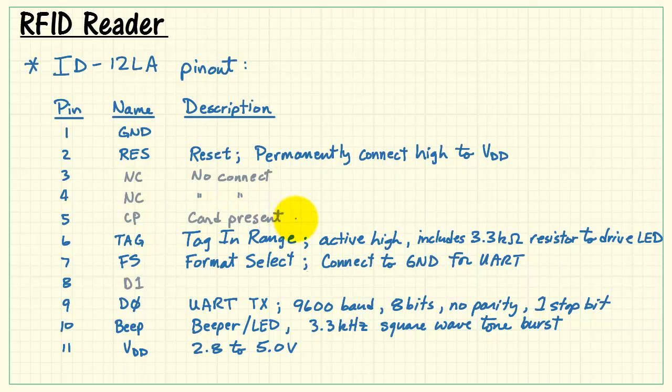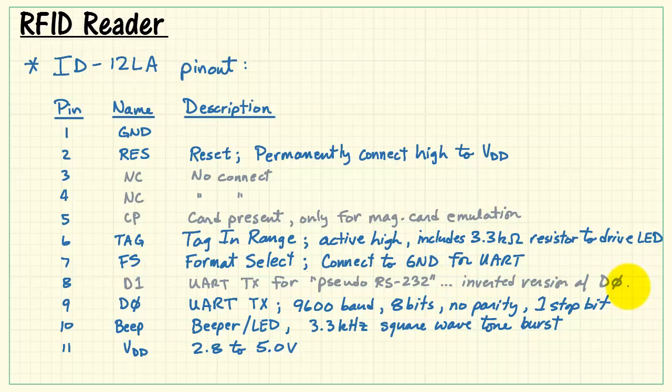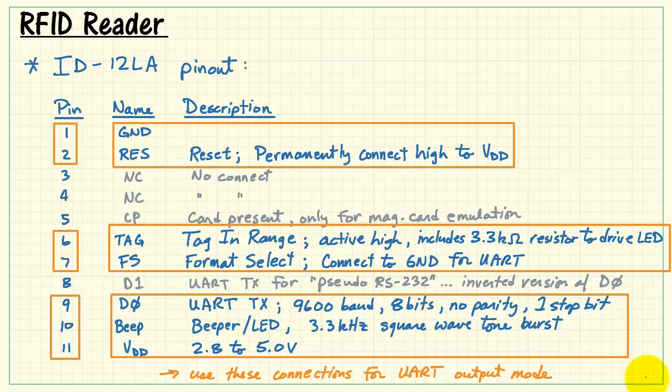Here's some no connects. CP stands for card present, but this is only useful if you're using something other than the UART mode. D1 is also a UART transmit, but it's an inverted version of the one that we need for D0. These highlighted connections, then, are the ones that you want to use for the UART output style.